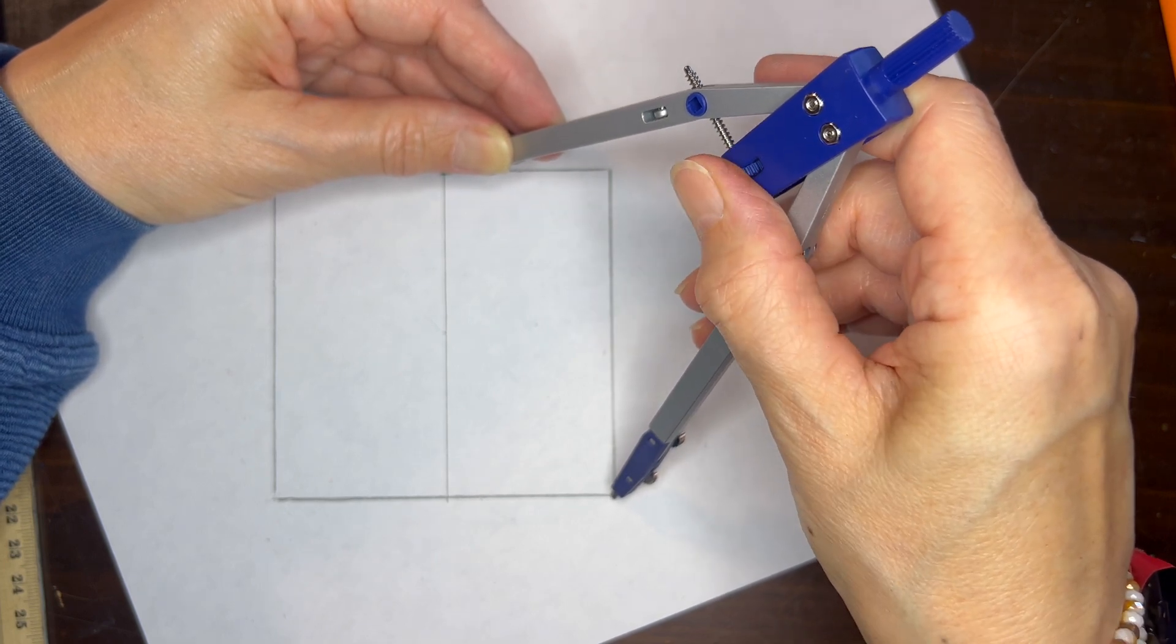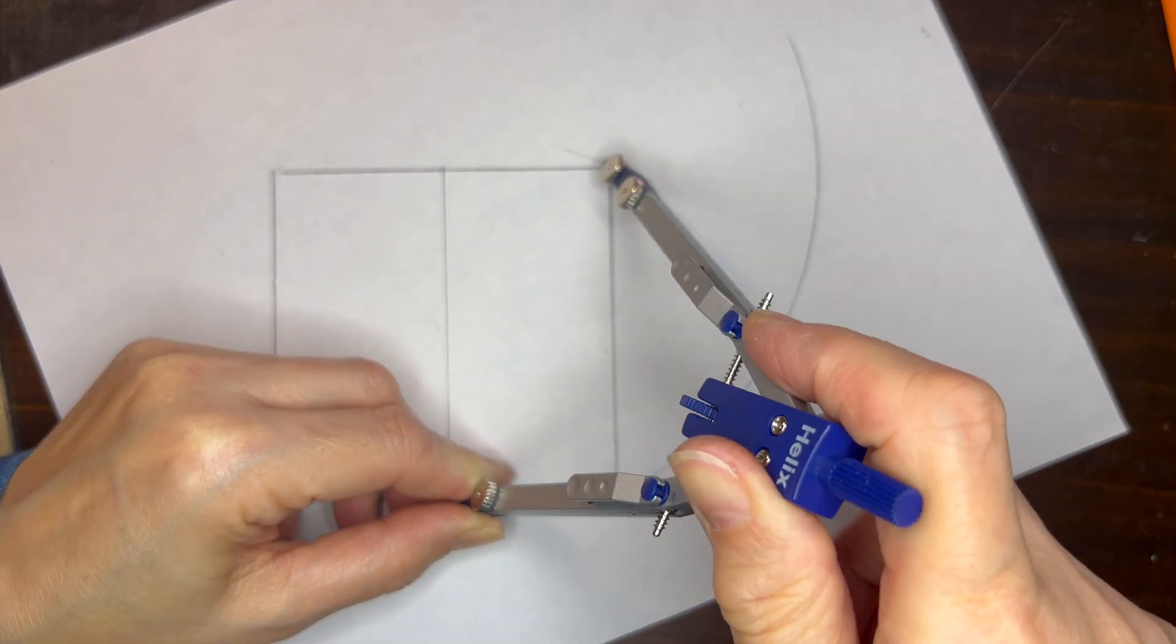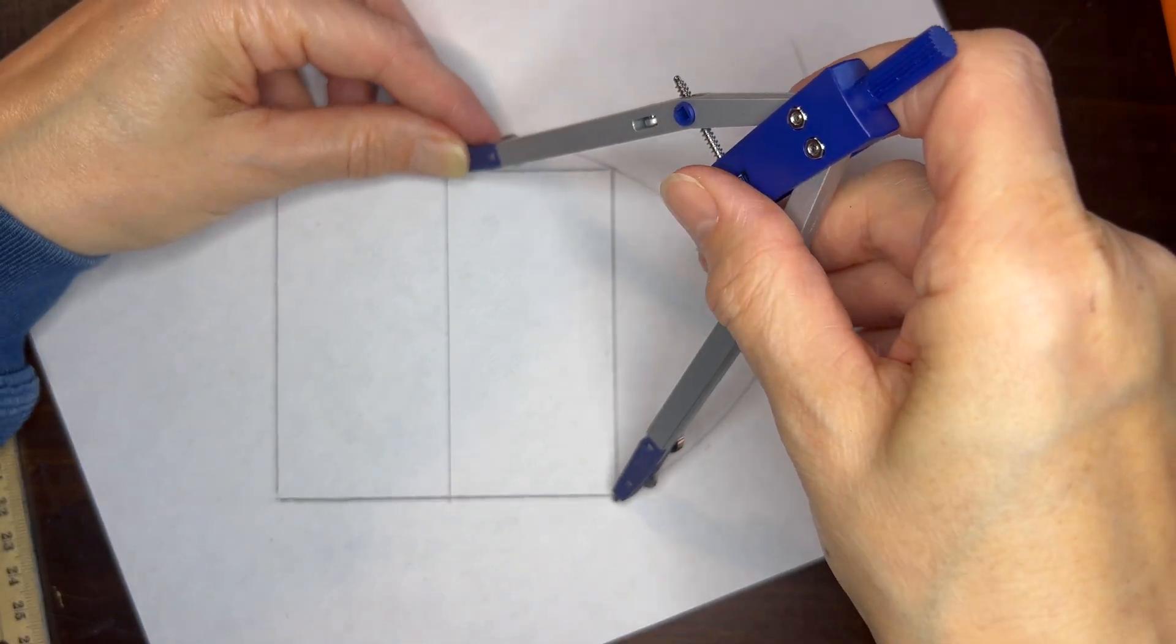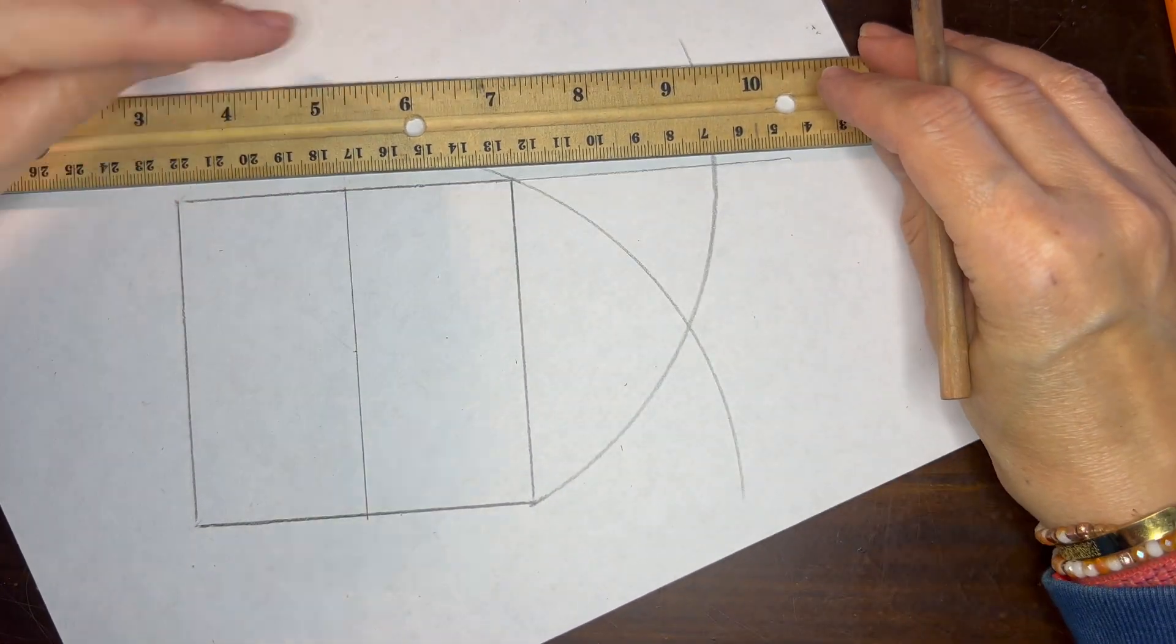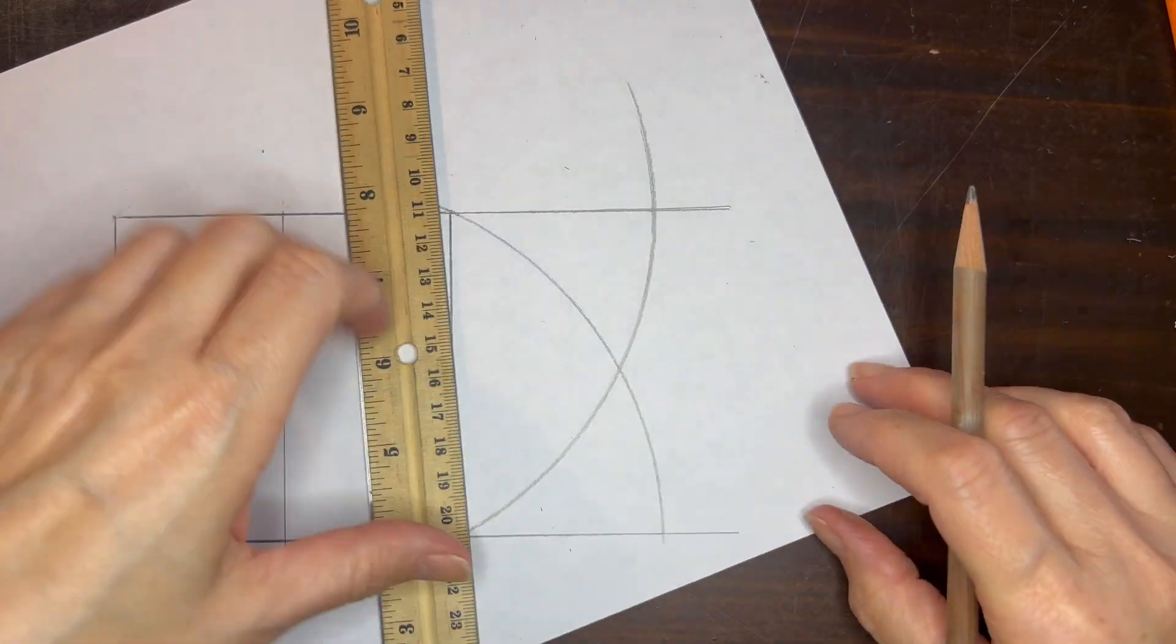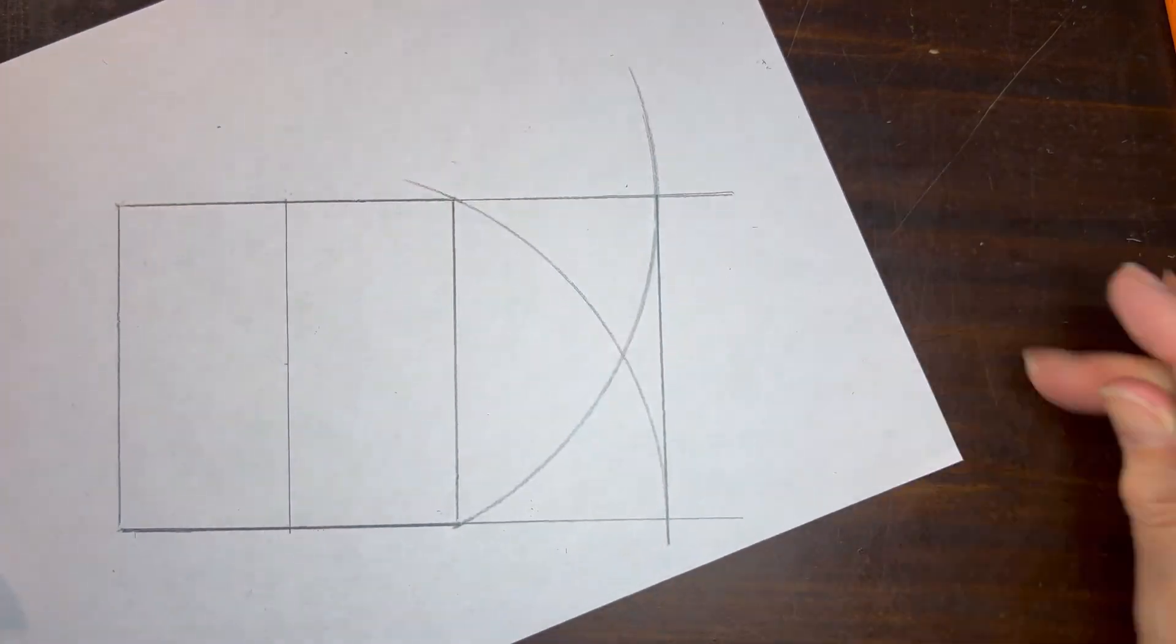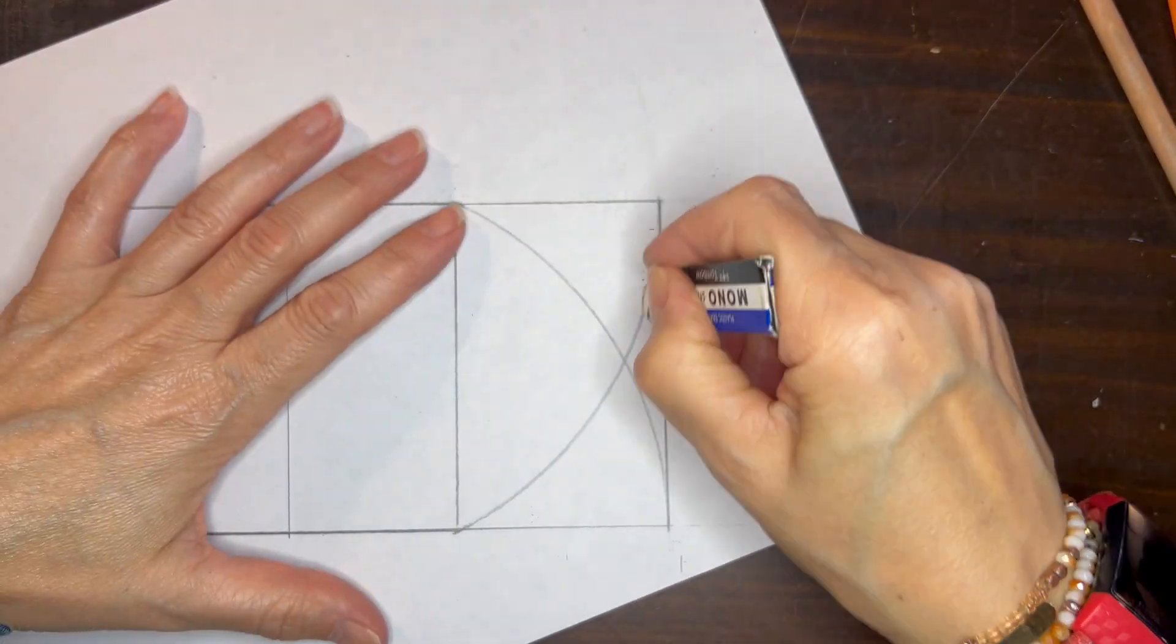We're going to set our compass at that midpoint and at the corner of our square and draw an arc and do the same at the bottom so that we have both of our arcs and now we can extend our square using our straight edge at the top and the bottom and then we can connect where those arcs cross and now we have created our golden rectangle.